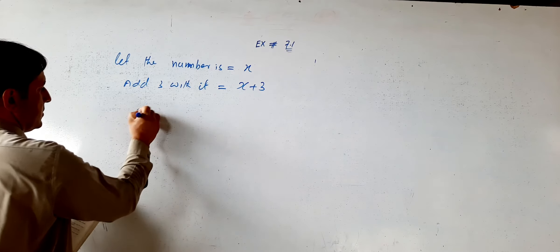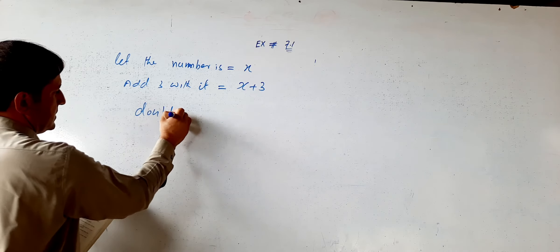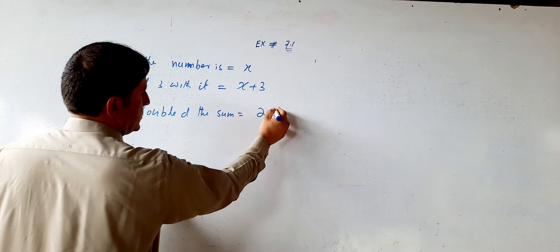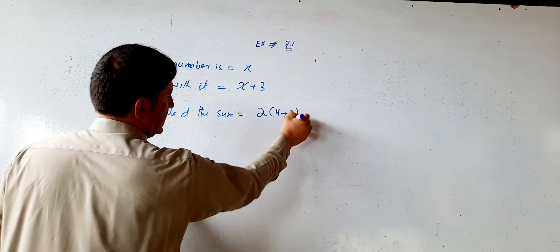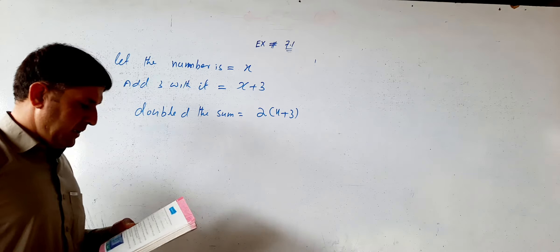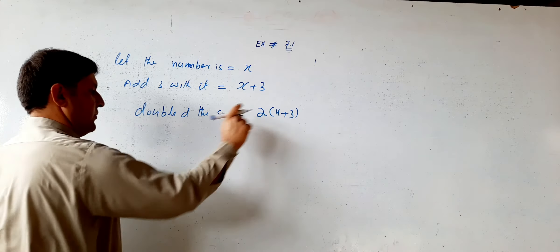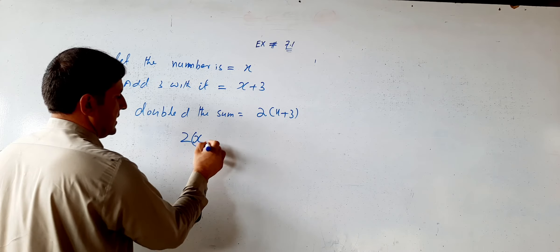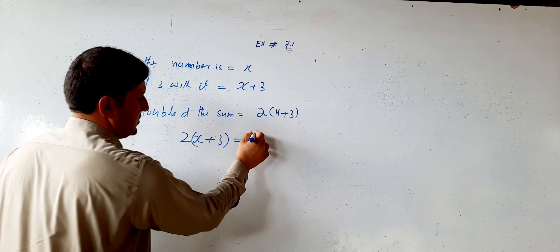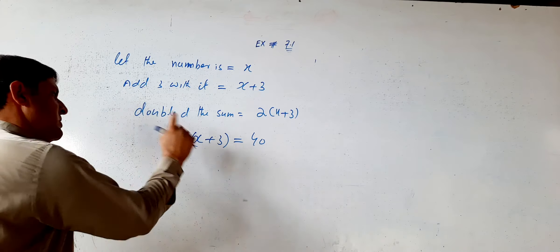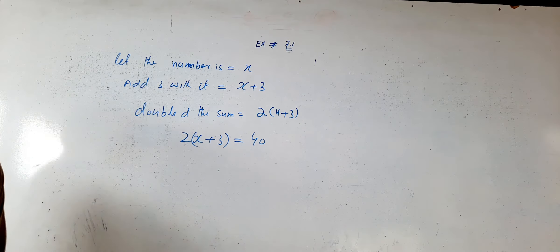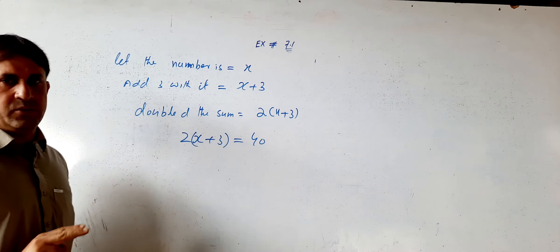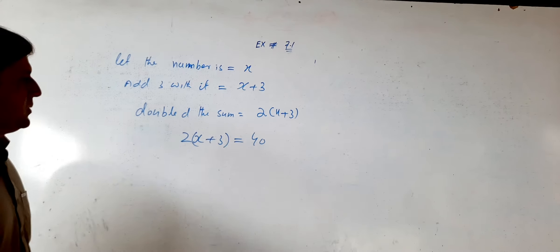Double the sum equals forty, so our equation is: 2(x + 3) = 40. Now we need to solve this linear equation to find the original number.